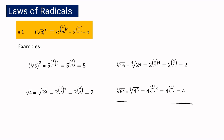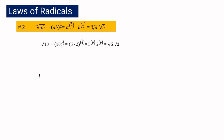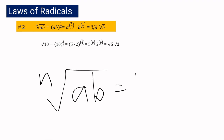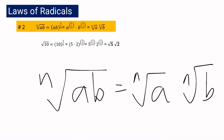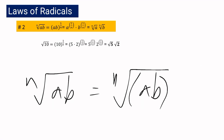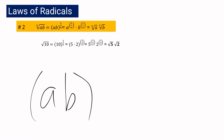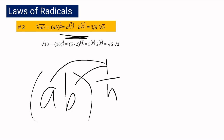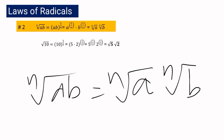For our second law of radicals, the nth root of ab is equal to the nth root of a multiplied by the nth root of b. If we have nth root of ab, it can be written as a rational exponent: quantity ab raised to 1 over n. Using the law of exponents, we distribute the exponent, giving us a raised to 1 over n multiplied by b raised to 1 over n. Rewriting these as radicals gives us nth root of a and nth root of b. That is why the nth root of ab is equal to the nth root of a multiplied by the nth root of b.